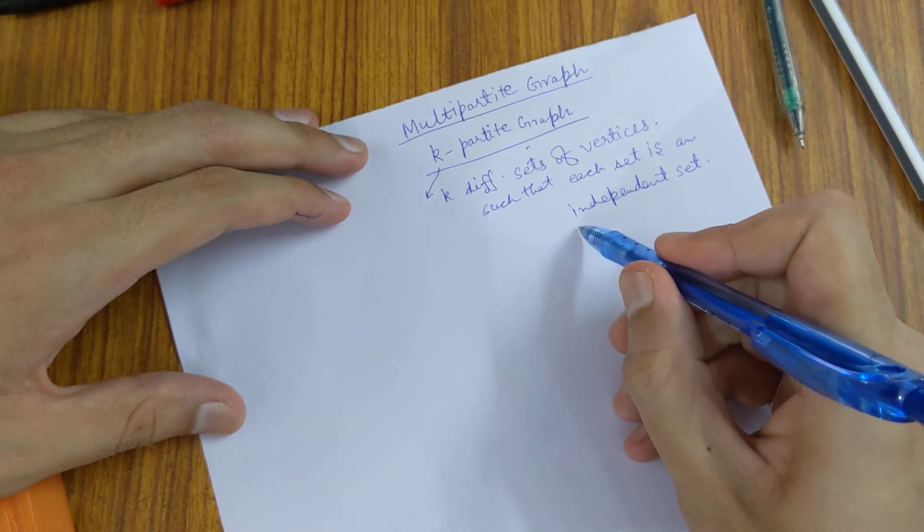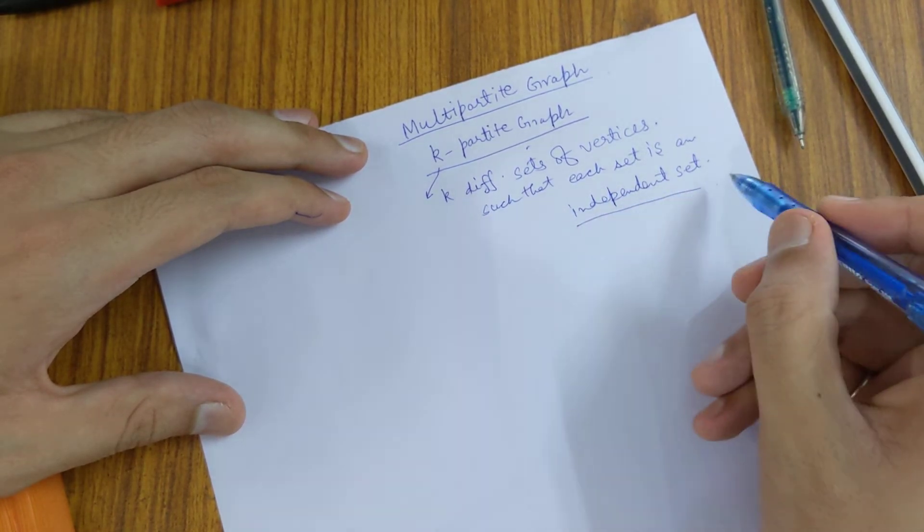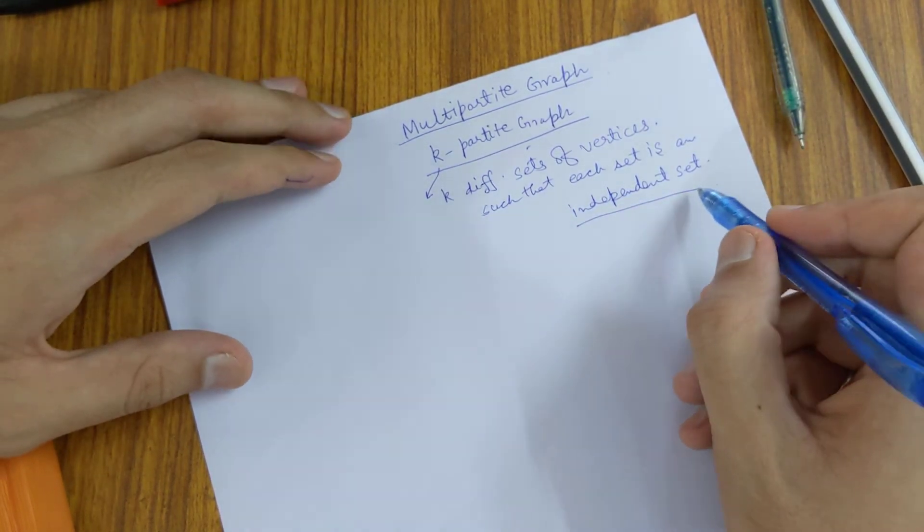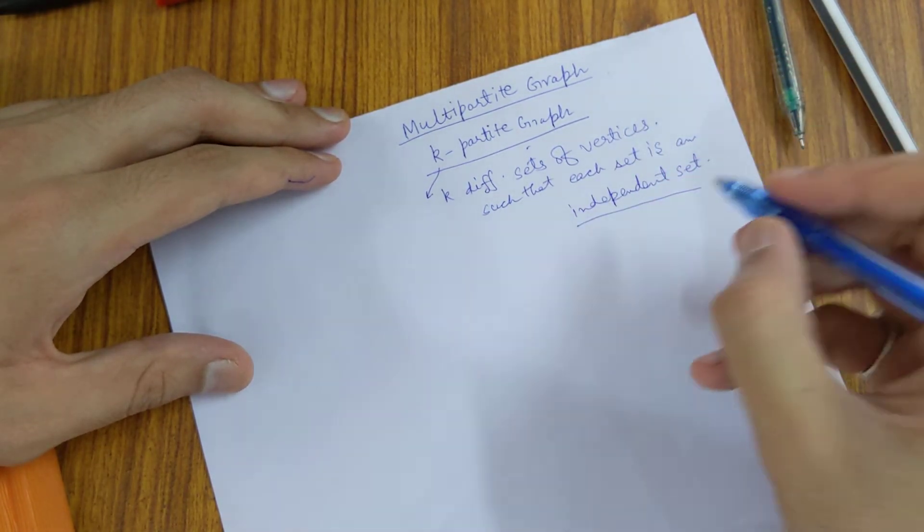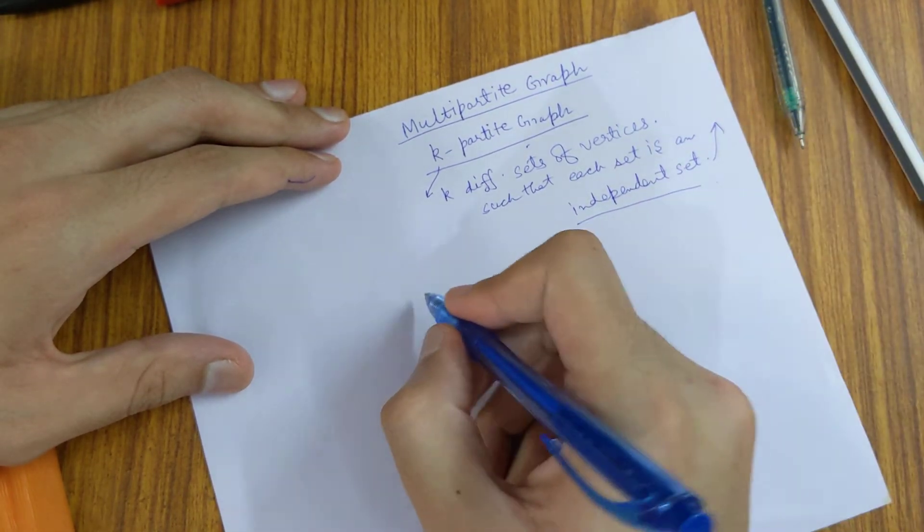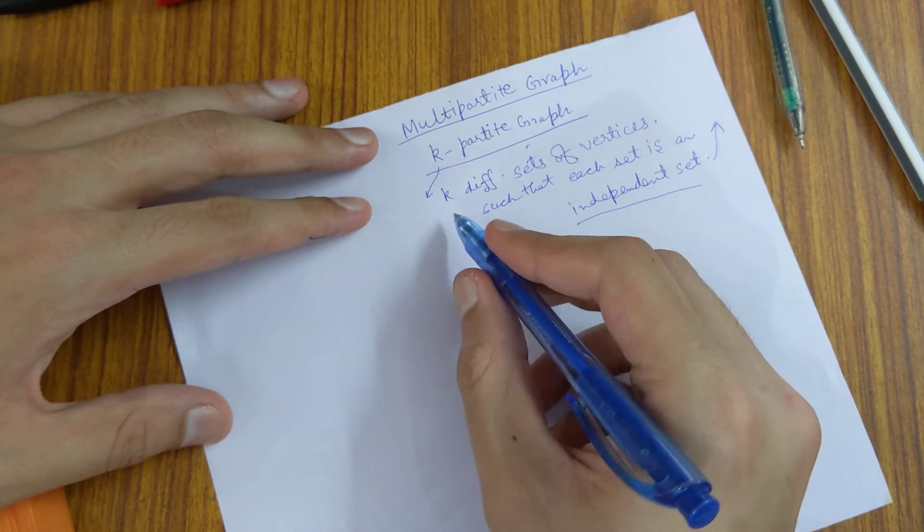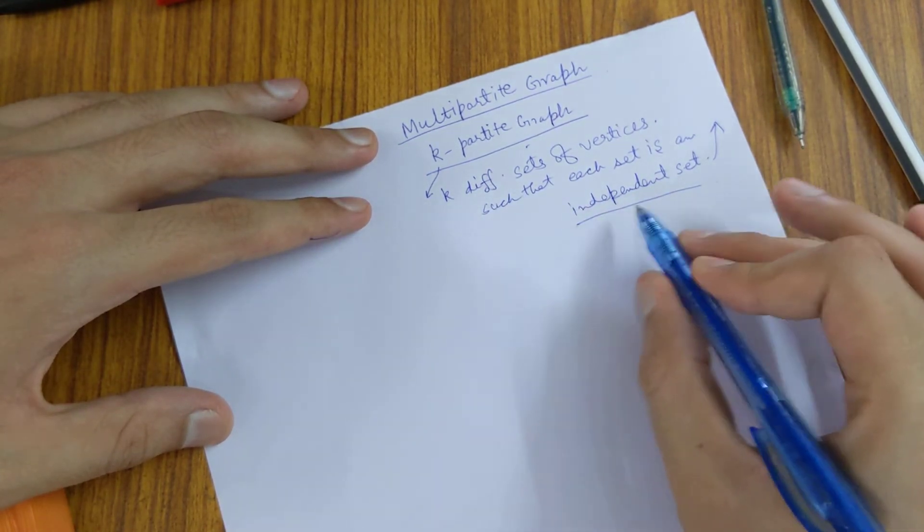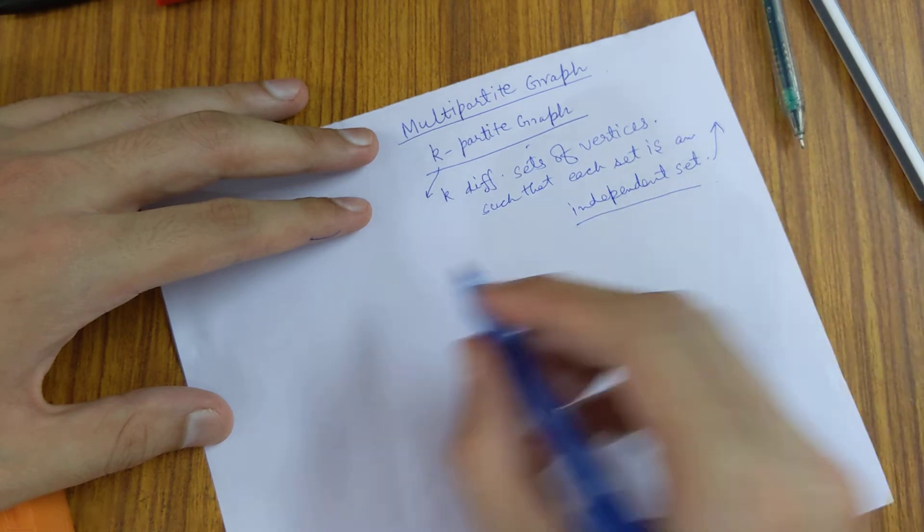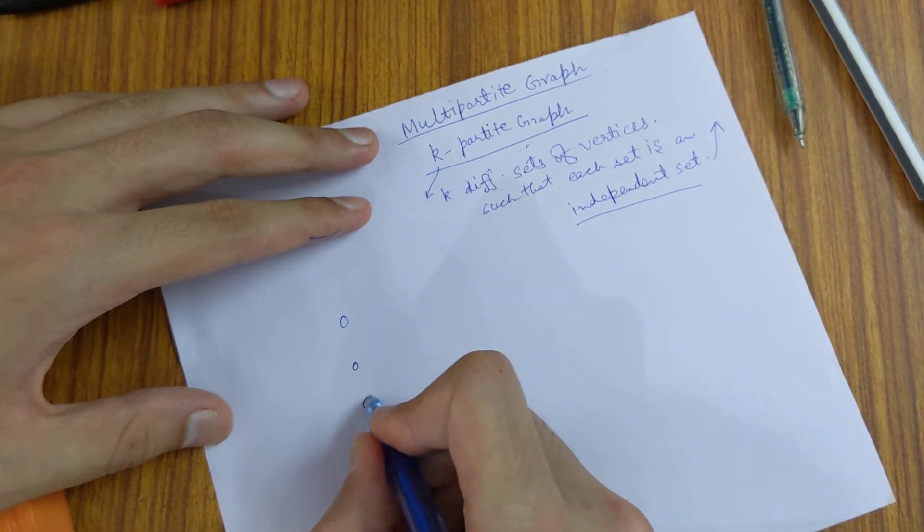I have made a different video lecture explaining an independent set, so I will add the link in the description. To briefly describe it, it is a set of vertices none of which are adjacent.